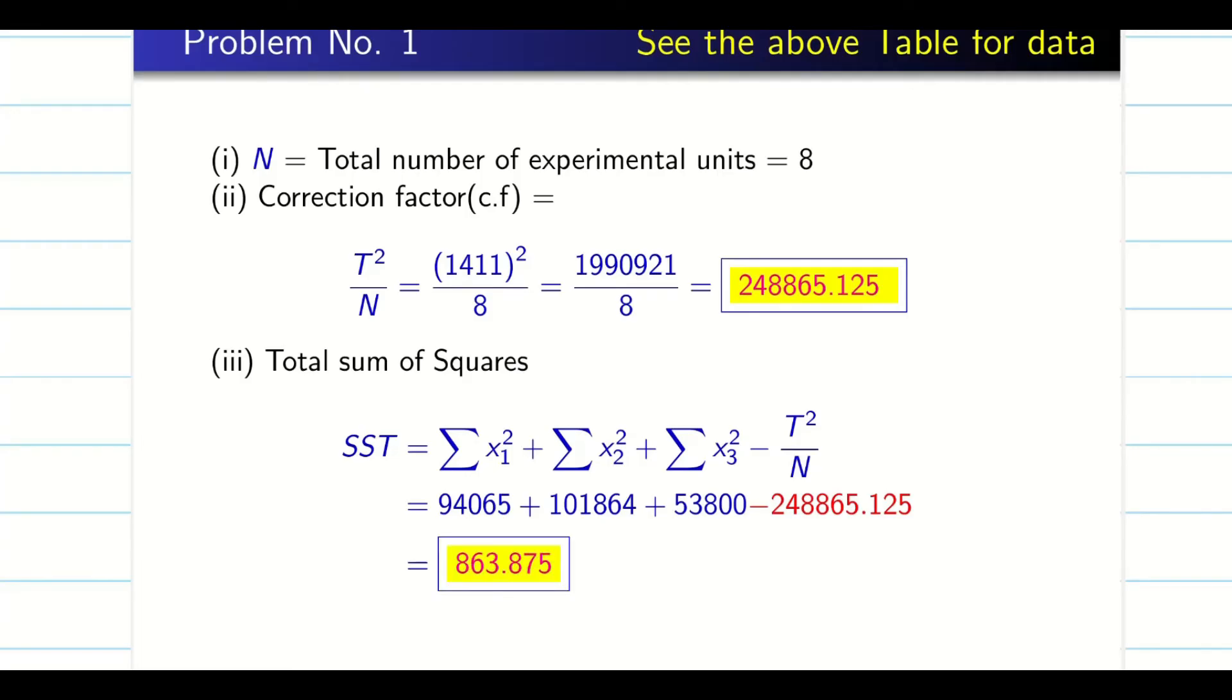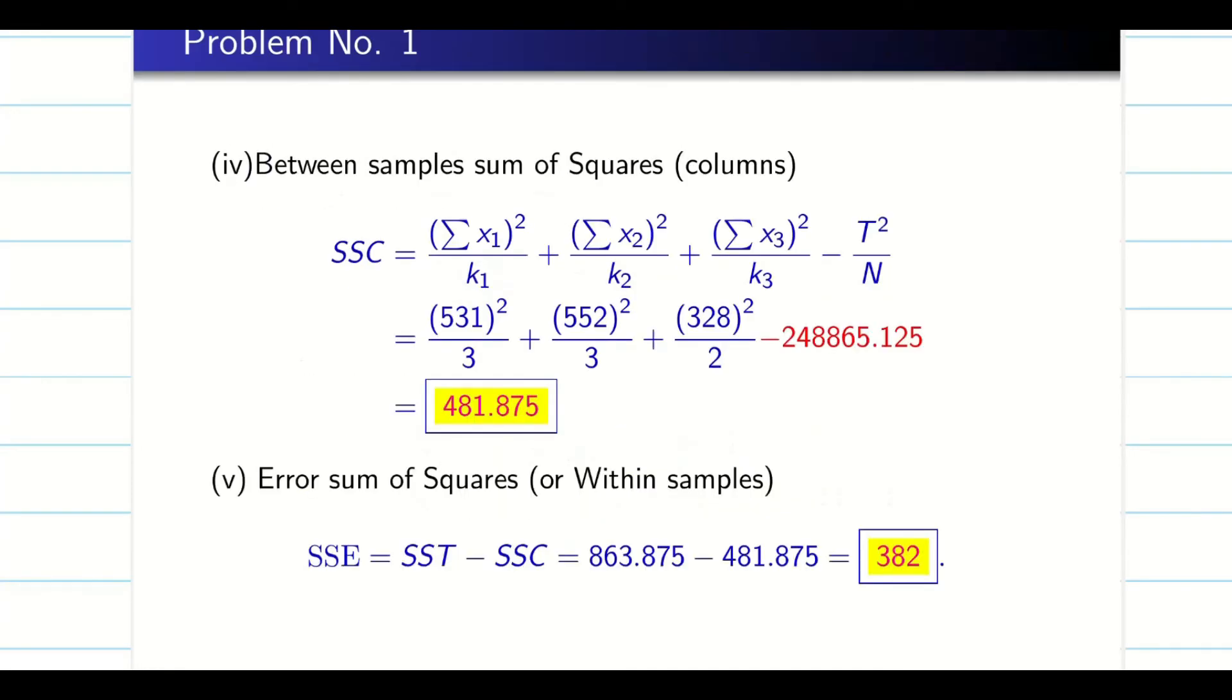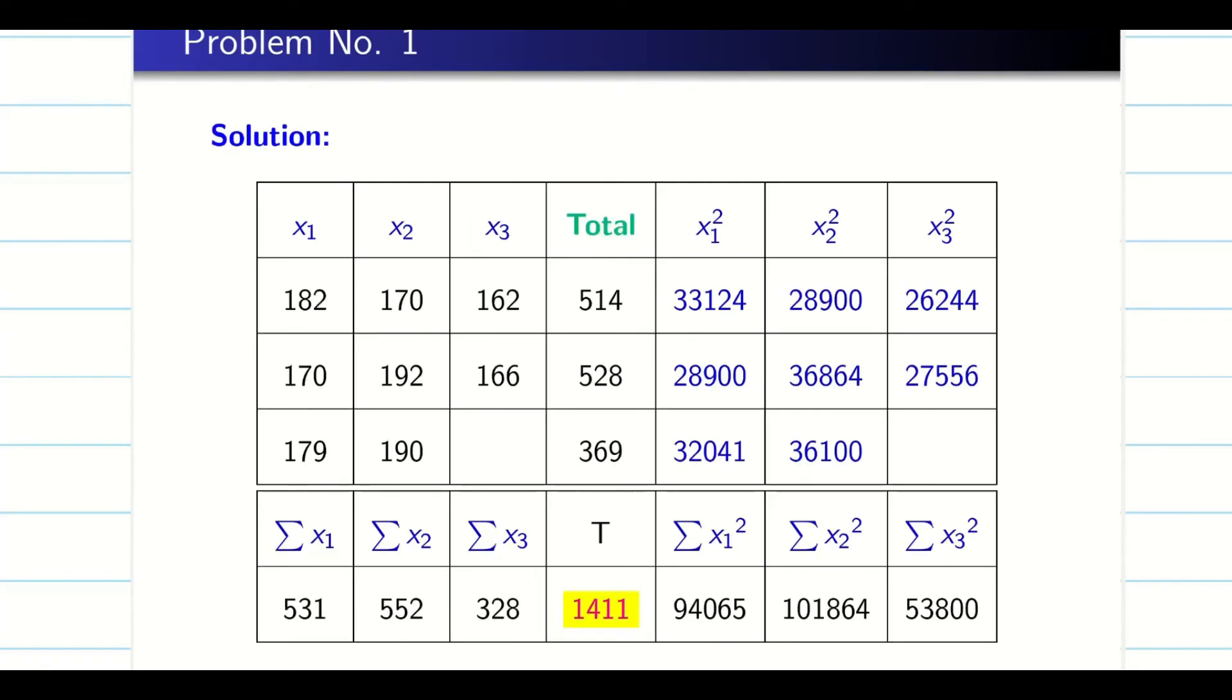Next, what I have to do, I have to find SSC. How to find SSC? Do you remember that? From the table, see the table. This is my summation X₁ square. See the table. This is summation X₁, summation X₂, summation X₃. So you are going to write the formula: summation X₁ by, you can use c1 also. I am using the notation k₁, it need not to be k₁, c₁. What is c₁? Number of elements in the column 1.